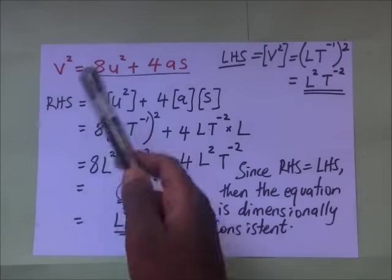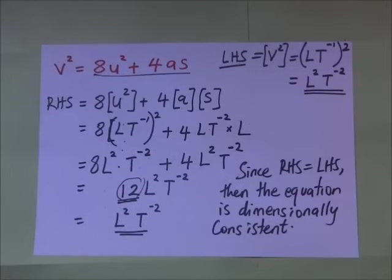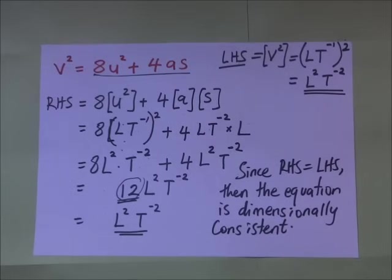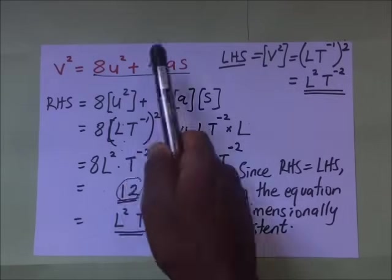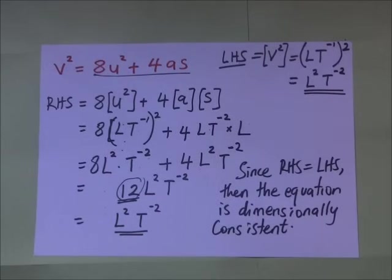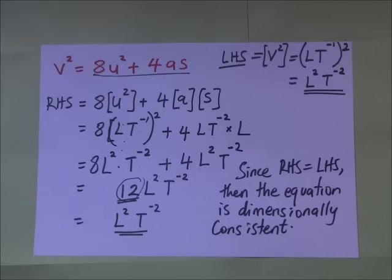This equation is consistent yet has wrong values because 8 and 4 are dimensionless constants. This brings us to the conclusion: when doing dimensional analysis, we can use it to eliminate wrong equations, but we cannot use it to prove the correctness of an equation. This is because you cannot use dimensional analysis to verify whether constants or factors such as ½, 8, 4, or π are correct.